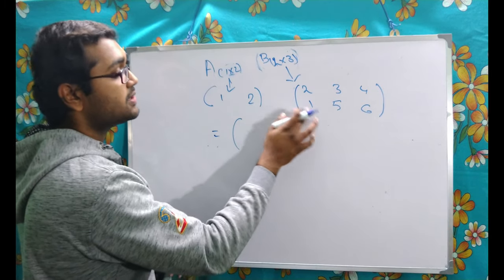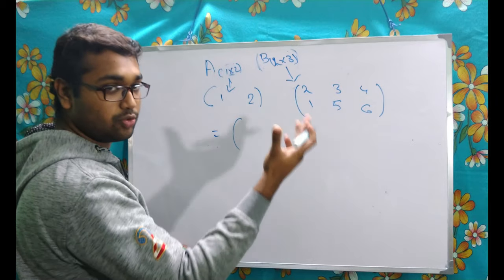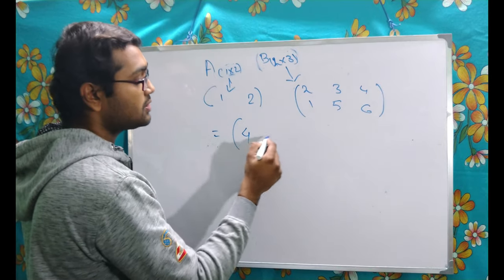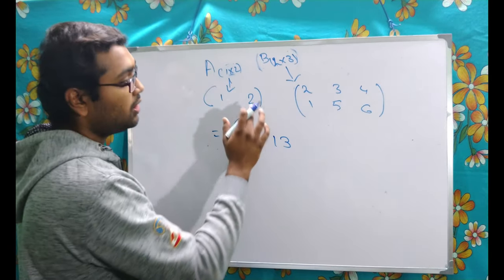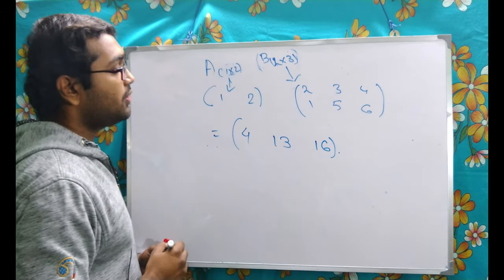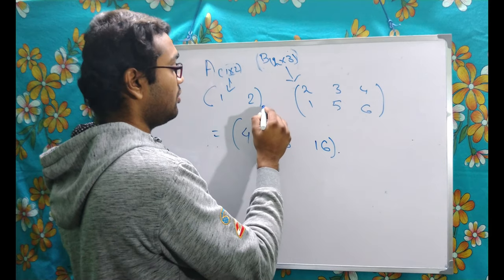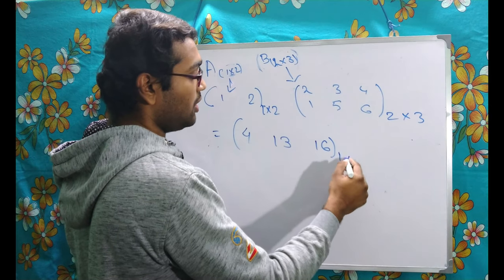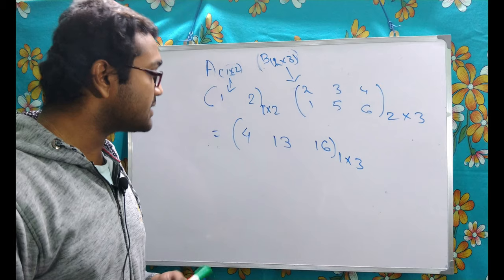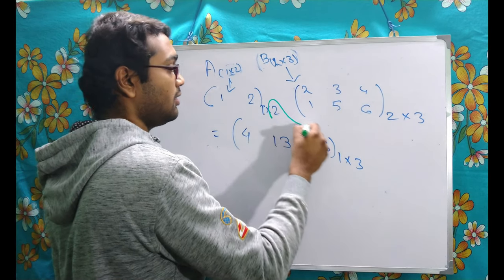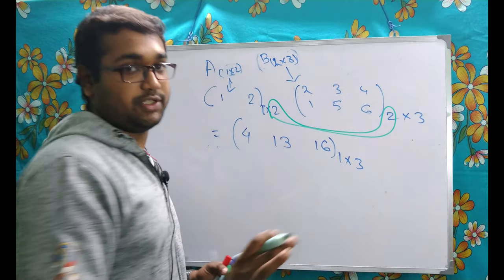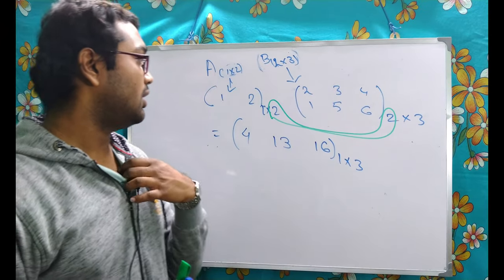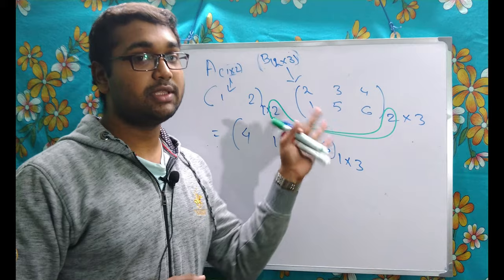When multiplying, for the first position: 1×2 + 2×1 = 4. For the second position: 1×3 + 2×5 = 13. For the third position: 1×4 + 2×6 = 16. So a 1×2 matrix times a 2×3 matrix gives a 1×3 result matrix. Notice the inner dimensions — the two — vanish, and the outer dimensions give the order of the product. This is why those inner dimensions must be equal.